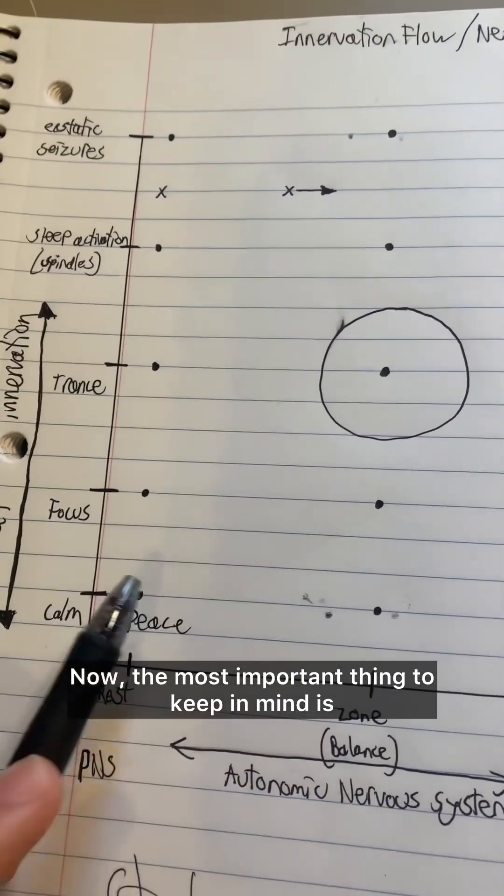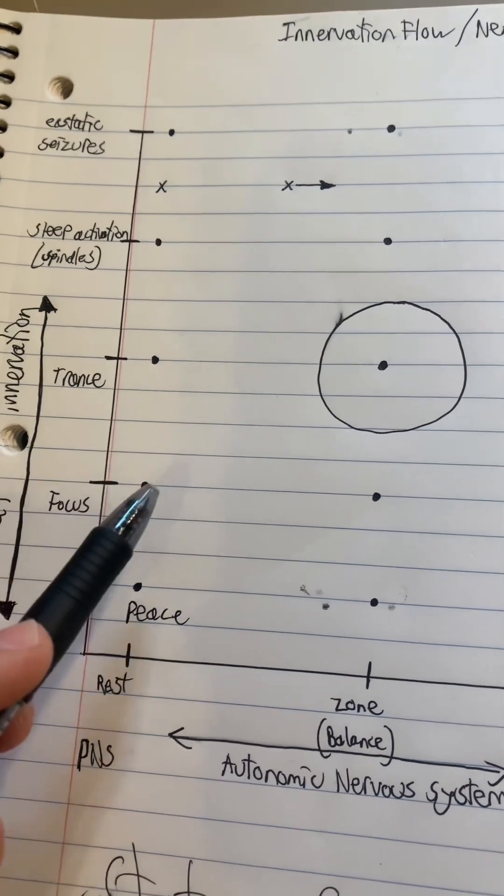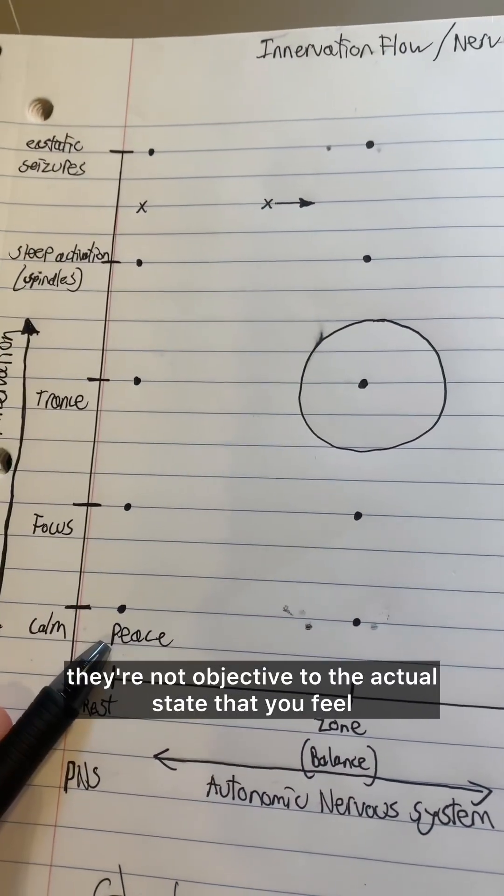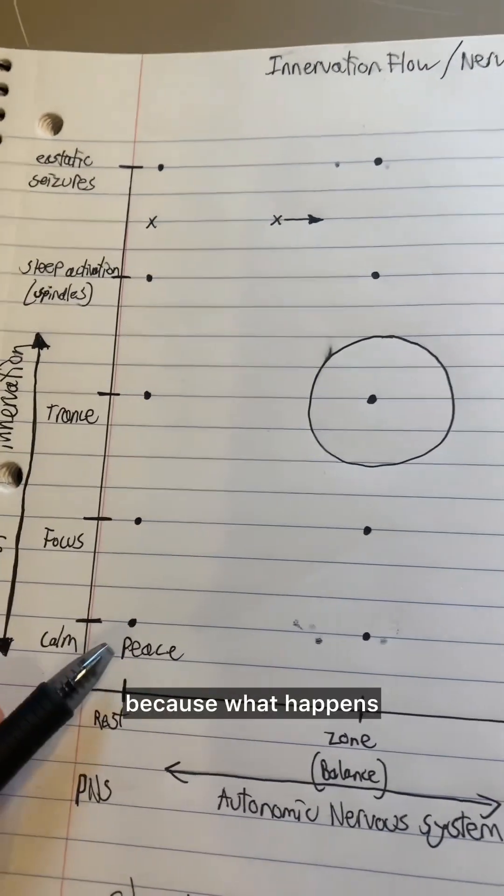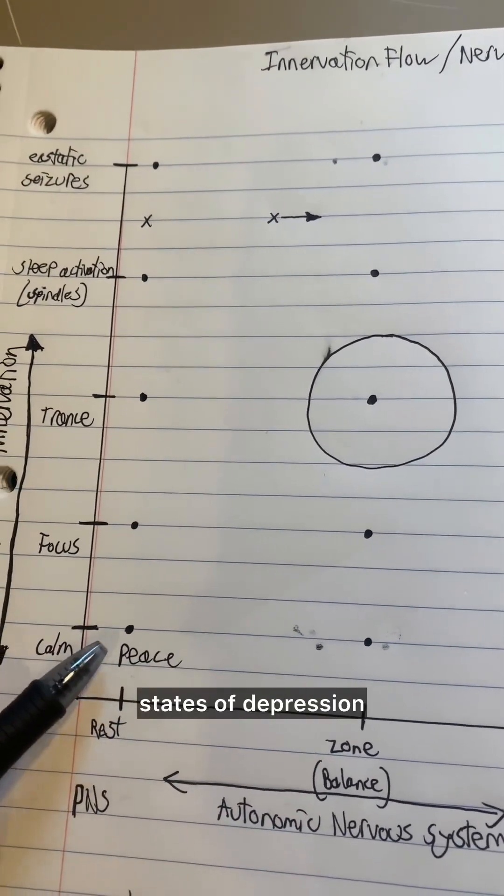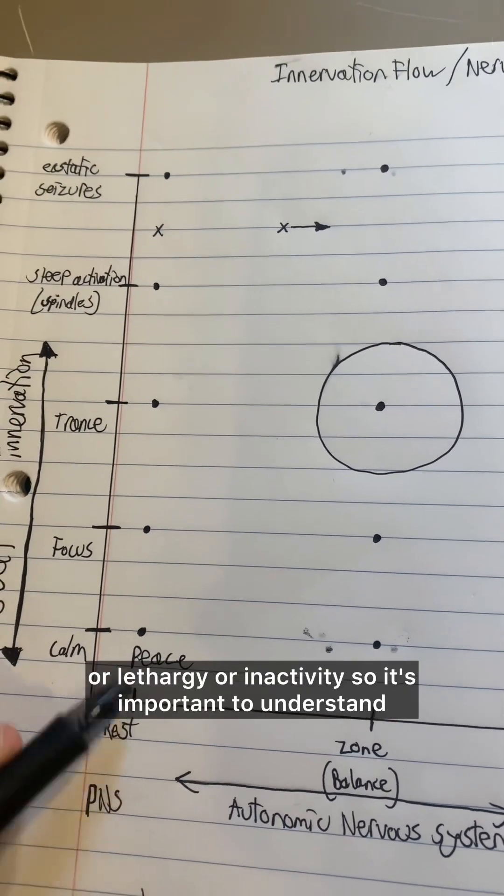Now, the most important thing to keep in mind is that these words, what we're going to label these points, they're not objective to the actual state that you feel. Because what happens if you're in calm and rest for too long? Well, then you get into states of depression, or lethargy, or inactivity.